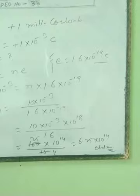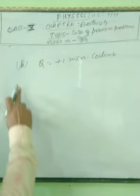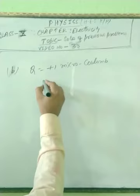Now in part B of question number 2, the value of Q is given plus 1 microcoulomb, means plus 1 into 10 to the power minus 6 coulombs.